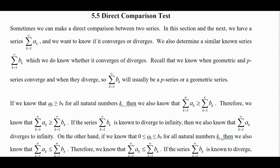Recall that we know when geometric and p-series converge and when they diverge. So the sum from k equals 1 to infinity of b sub k will usually be a p-series or geometric series.